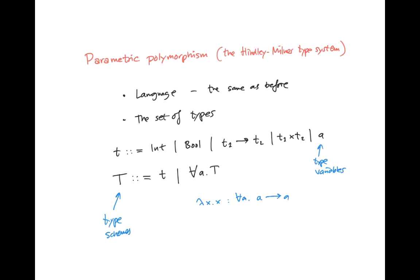And then if need be, we can have this general identity function behave as a function of type integer to integer, or as type bool to bool, or whatever we want. So we have to have a notion of specialization of type schemes. We also want to be able to conclude that an expression has a type scheme, so we also need to find type schemes from types.